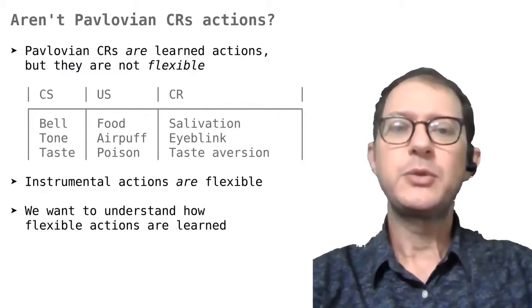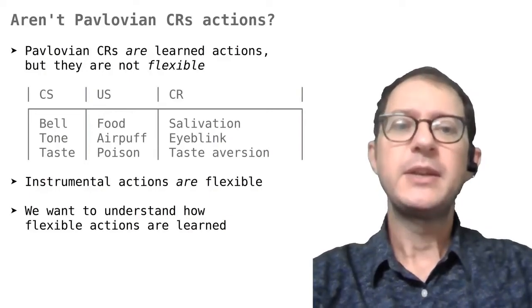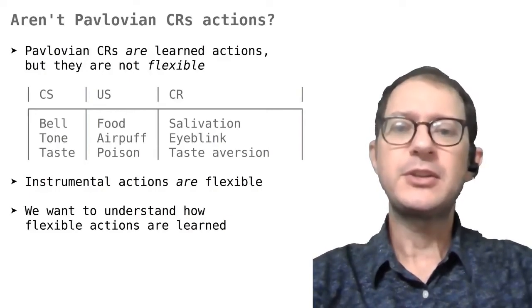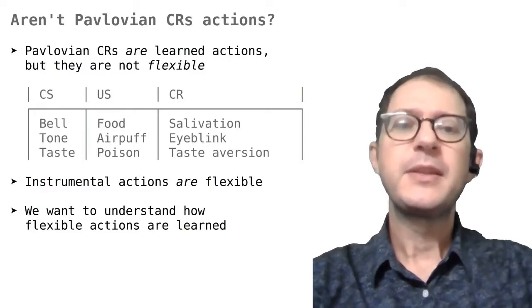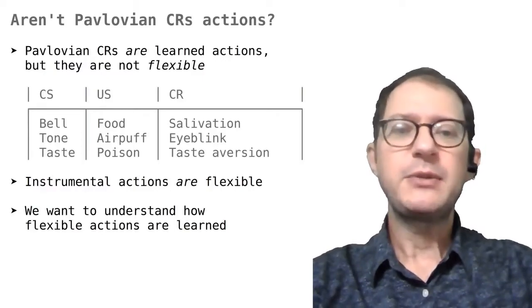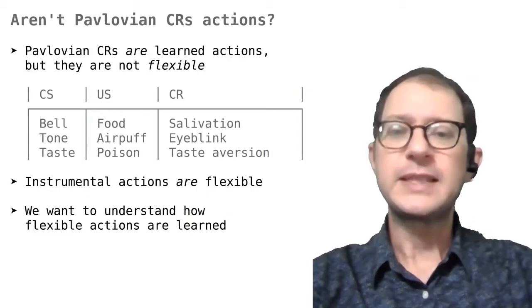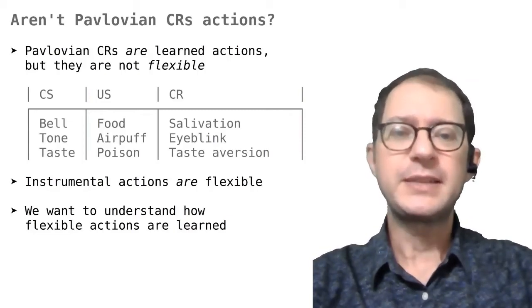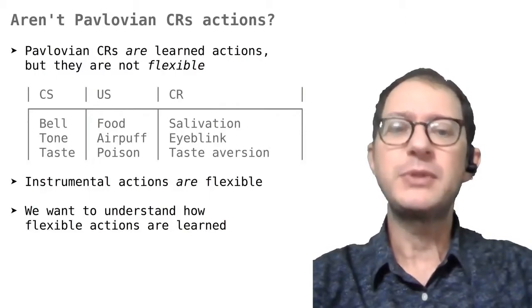Once we have decided to use a CS and a US, the CRs that the animals learn are pretty much fixed. The table shows some typical examples. The point is that you cannot use the bell and food, for example, to train eye blink, taste aversion or anything else that the animal does not learn spontaneously when you use a bell and food.